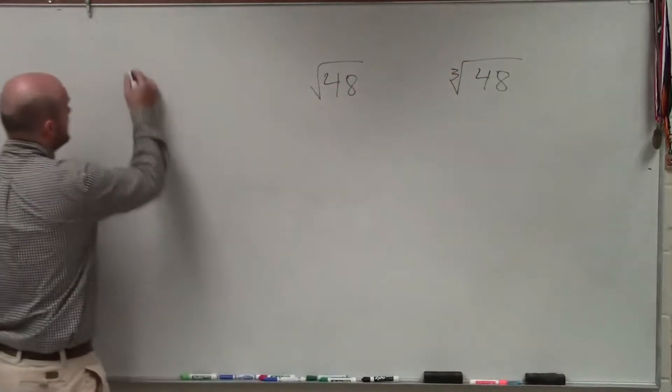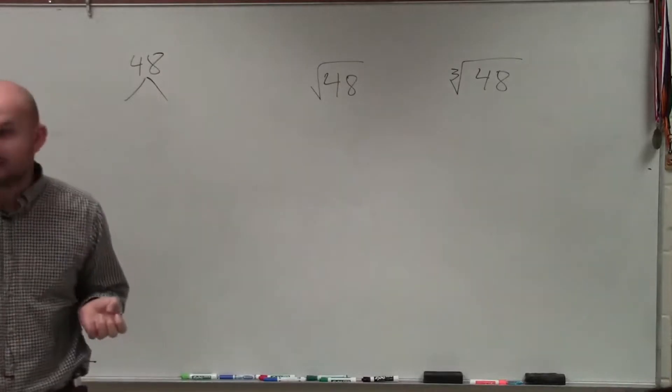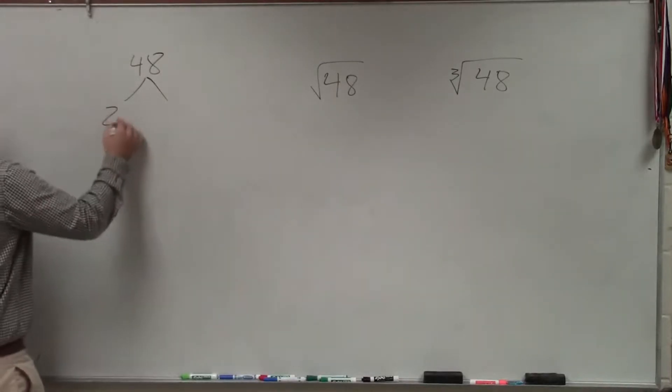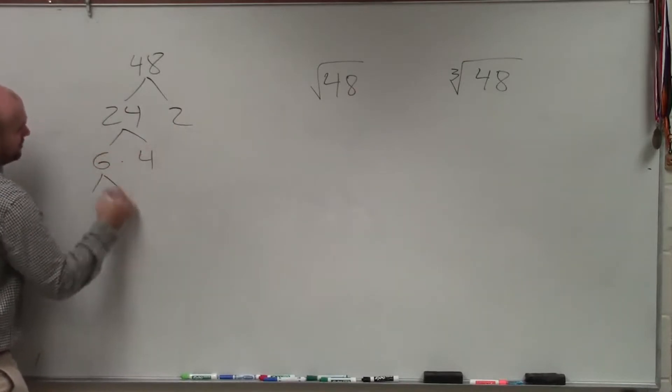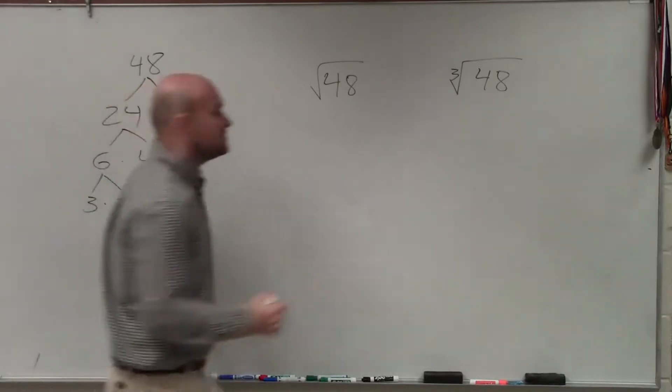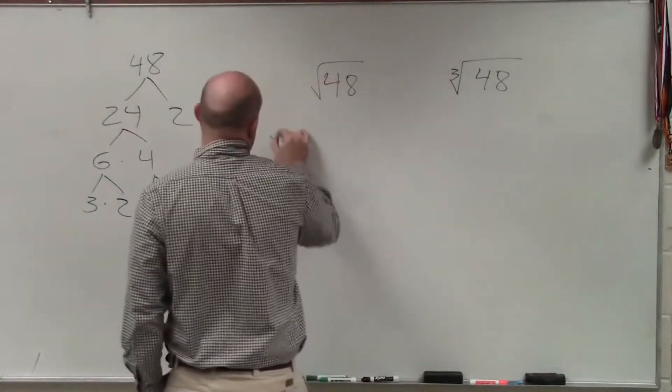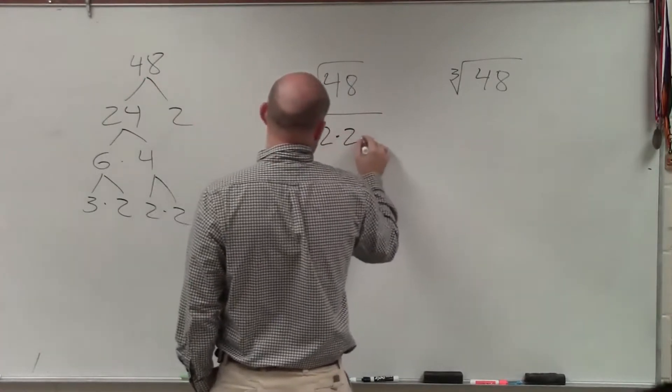So if I was going to do that, I would just take 48. And, ladies and gentlemen, the prime factorization, we can break that down. We know it's 24 times 2, then you can do 6 times 4, 3 times 2, 2 times 2. So therefore, if I was going to do this for the square root, I would do 3 times 2 times 2 times 2.